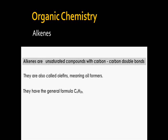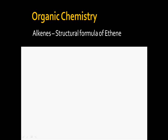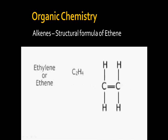Alkenes have the general formula CnH2n. If there are n number of carbon atoms, then the number of hydrogen atoms is 2n. Ethene, propene, and butene are examples of alkenes. The structural formula of ethene — also called ethylene — has the molecular formula C2H4.